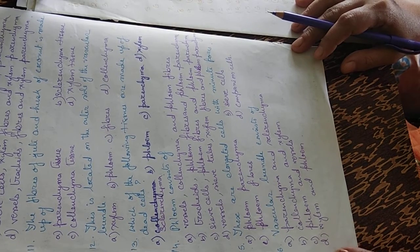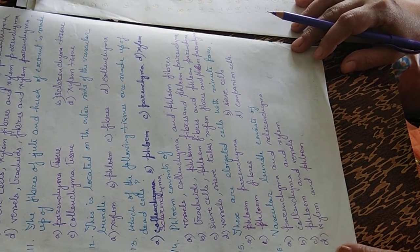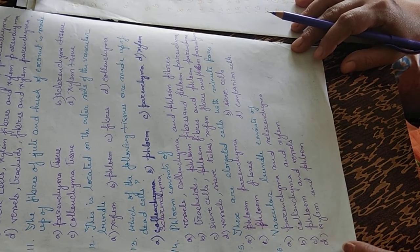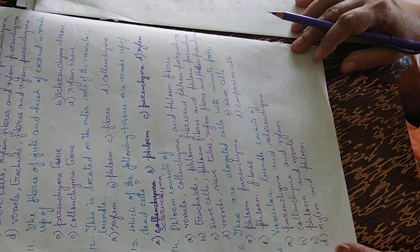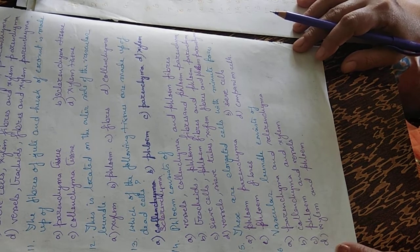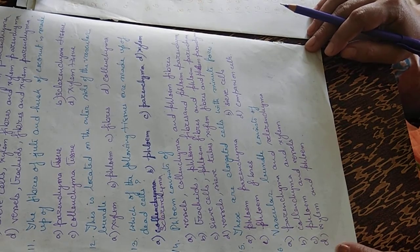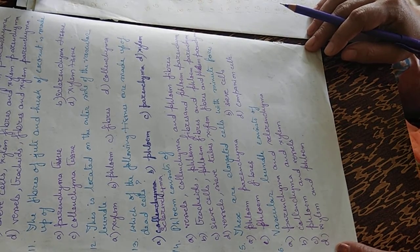Question fifteen: these are elongated cells with minute pores. Options are phloem, parenchyma, sieve cells, phloem fibers, and companion cells. The fifteenth answer is sieve cells.